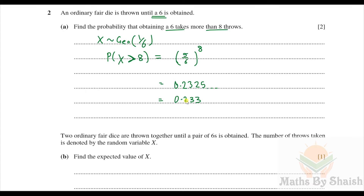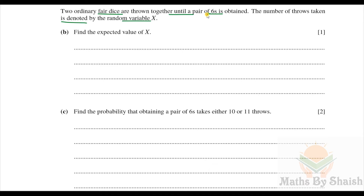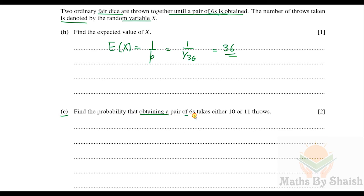Part (b): Two ordinary fair dice are thrown together until a pair of sixes is obtained. The number of throws is X. Find E(X). Since it is geometric, E(X) = 1/p. The probability of a pair of sixes is 1/36, so E(X) = 36.